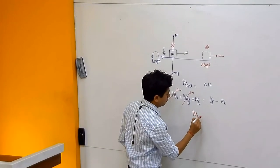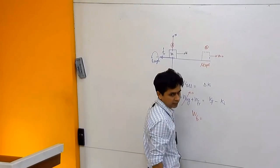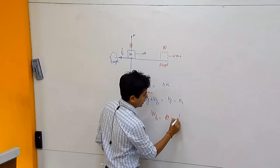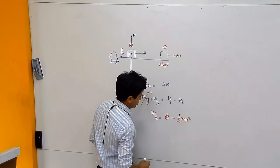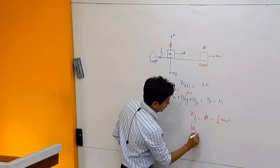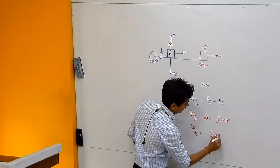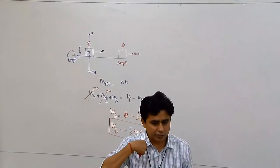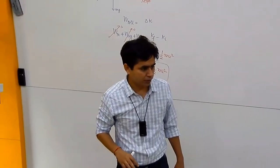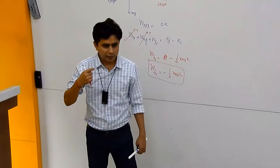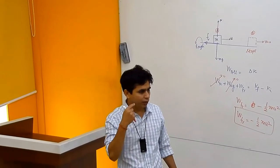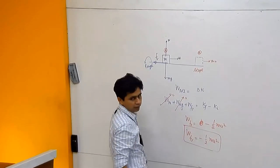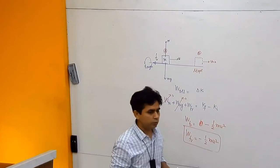Work done by normal is 0 because it's perpendicular to the surface. Work done by mg is also 0, again perpendicular to the surface. So work done by friction equals Kf minus Ki. Kf is 0, and Ki was ½mu². So work done by friction is the negative of the initial kinetic energy — that is, minus ½mu². Friction does negative work, eating up the entire kinetic energy.